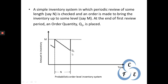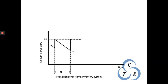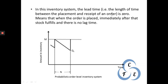Let us say the inventory consumed is q1 — that is the inventory consumed out of capital M. At the end of that period we order quantity q1 to bring the inventory back up to M. This is the simulation of an inventory system. We also need to discuss the term lead time, which is the length of time between the placement and receipt of an order.